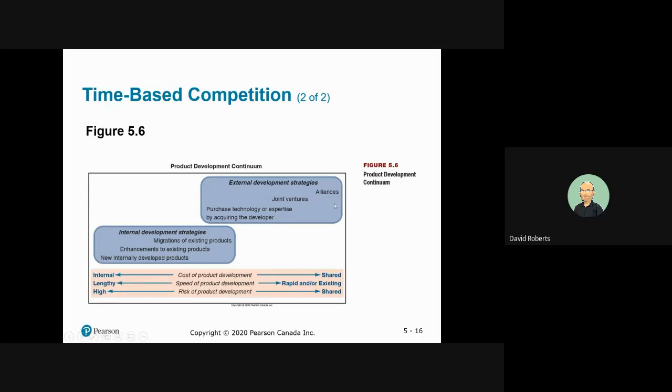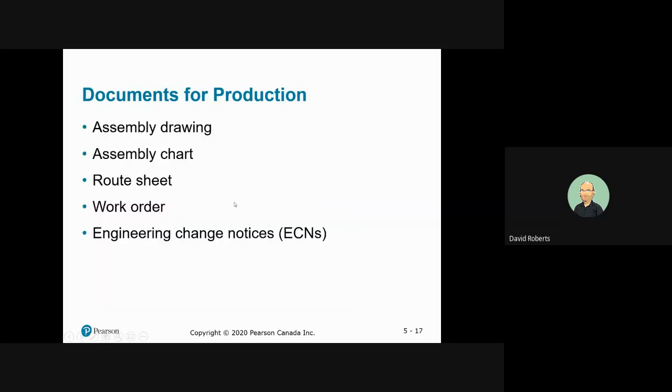For one extreme, you do it all yourself. Two, you develop it with other companies. You need this, how to assemble it. You have charts and drawings. You have a routing sheet, which is the process. Work orders. And the engineering change notices, which are when you are going to make changes to the product. It doesn't always stay the same.